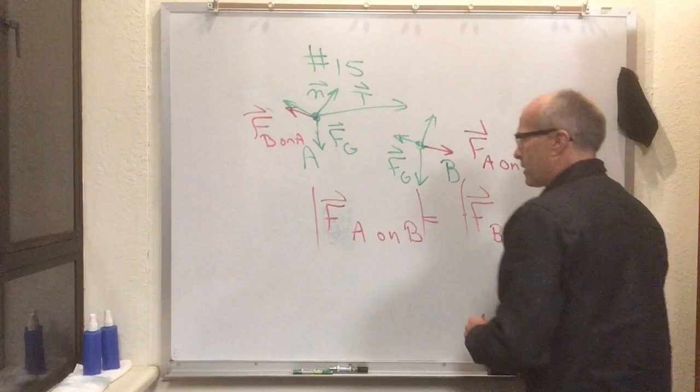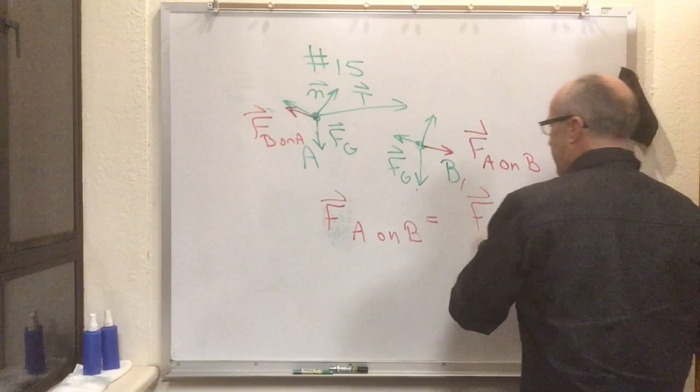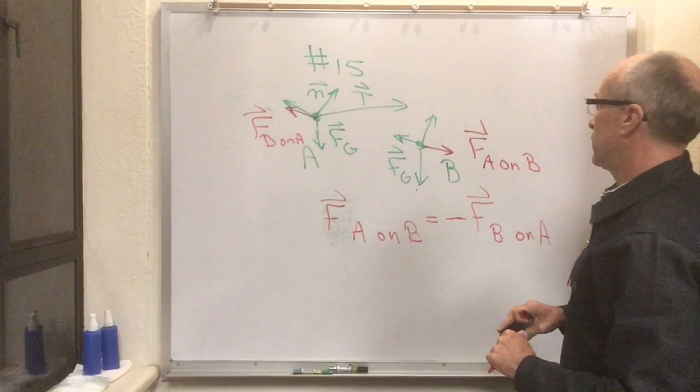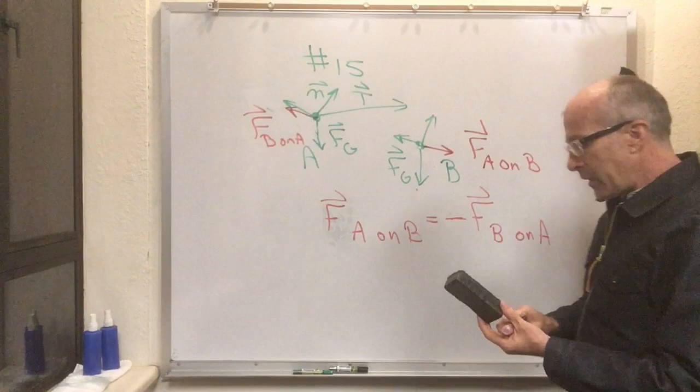So one thing this equation says is that the magnitude is the same, and the other thing this equation says is that the direction is opposite. So one way you'll sometimes hear Newton's third law stated is that for every action there's an equal and opposite reaction. This is the precise mathematical way to say it.